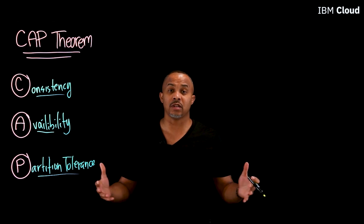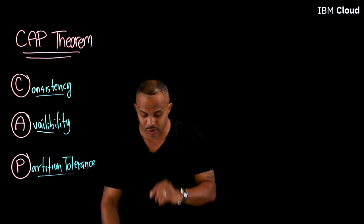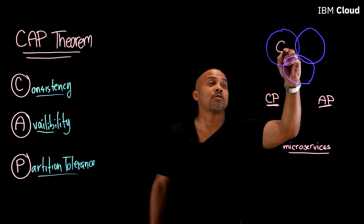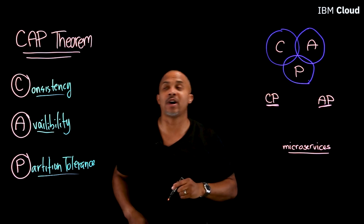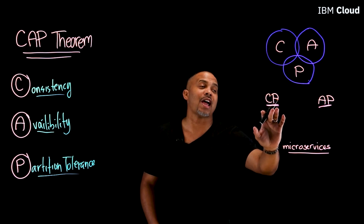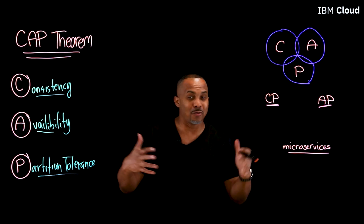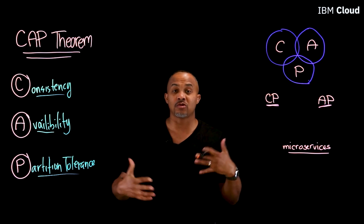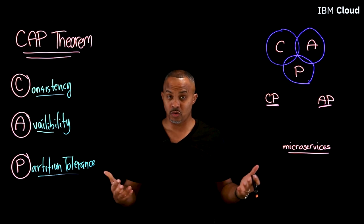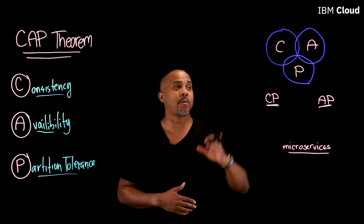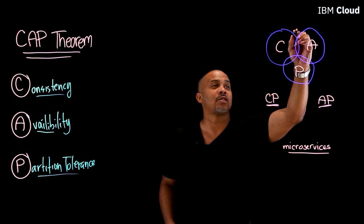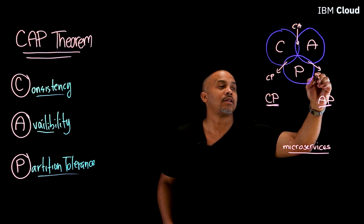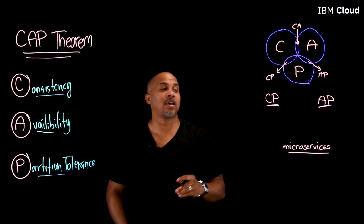So now we have all three: CAP. Let's talk about how it's represented. You'll often see them pictured with three circles. You can only have two out of the three at any given time — that's the 'cake and eat it too' situation. In a lot of distributed architectures, your decision about which database to use depends on what's most important. The intersections give you CA, CP, and AP.